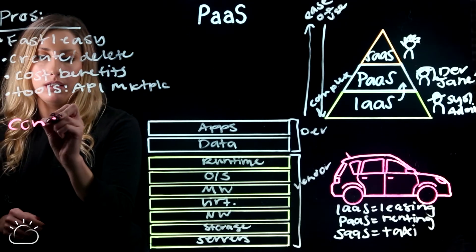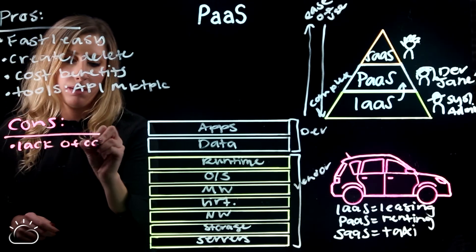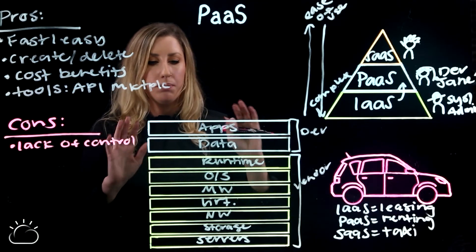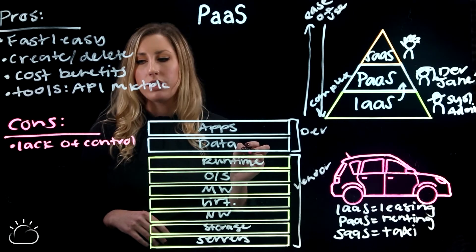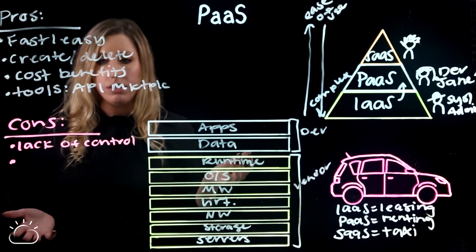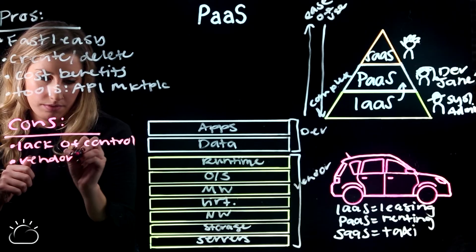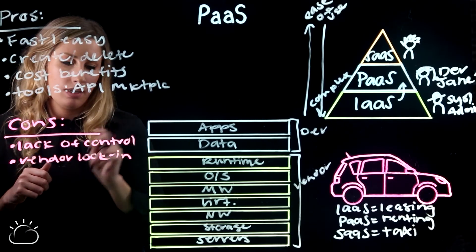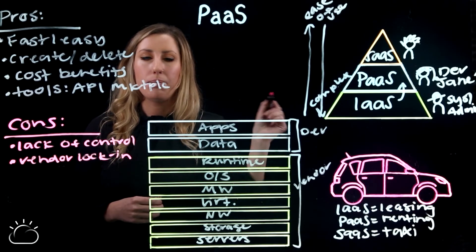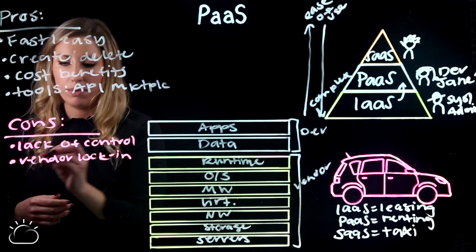There are some cons to using Platform as a Service. The big one is lack of control — though some people will still say that's a pro, because although some people like to fine-tune their infrastructure, a lot of people don't want to or don't have the ability to do that. Another con is vendor lock-in. It's a little hard to migrate your app from one cloud to another unless you're using an open source framework like Cloud Foundry, so make sure you trust and like your cloud provider before you choose it.